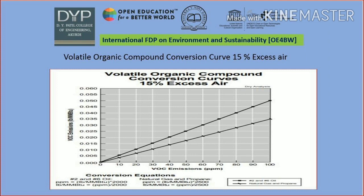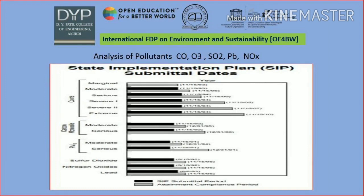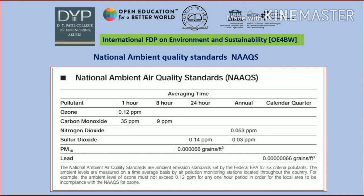This slide shows the volatile organic compound (VOC) conversion curve. When 15% excess air is used, we can see what happens. Next is the analysis of pollutants — by carbon monoxide, ozone, sulfur dioxide, lead, and nitrogen dioxide — and what are the moderate and serious levels.